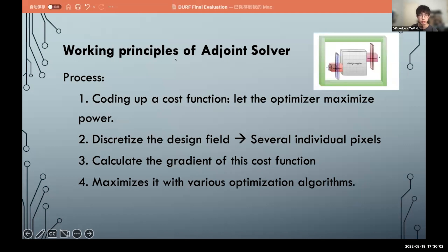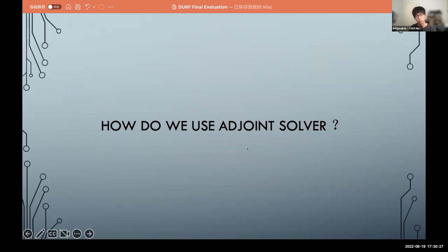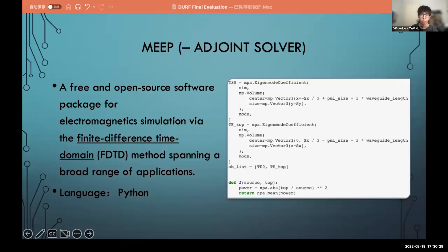And how does the adjoint solver work? Here is the working principles of the adjoint solver. First is we're coding up a cost function and discretize the design region into several pixels, and it will calculate the gradient of this cost function with respect to all the pixels, and then it will use the optimization algorithm to maximize the gradient and finally get the design region.